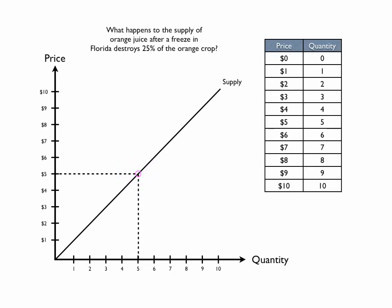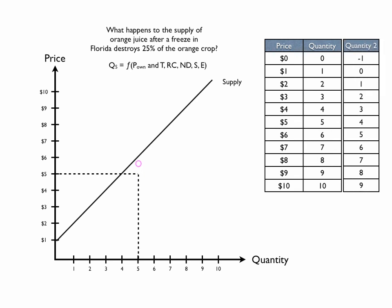Let's take a look at this market, starting at $5 with 5 units of orange juice. What happens to the supply of orange juice after a freeze in Florida destroys 25% of the orange crop? The quantity supplied of orange juice is equal to some function of the price of orange juice — that's movement along the supply curve, holding other things constant. One of those other things changed: a natural disaster increased the resource costs of orange juice, causing a decrease in supply of oranges and therefore a decrease in supply of orange juice. The price of orange juice for 5 units goes from $5 to $6. Before, 5 units were supplied at $5; now, because of the natural disaster, suppliers are only willing to bring 5 units to the market if they're paid $6. Or from the horizontal view, at $5 suppliers were willing to bring 5 units before but now only 4 units.